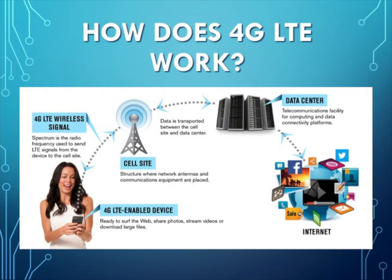Now that you know some basic information about LTE, you must be wondering how it works. As we can see in the picture, the information is passed back and forth to three important places: the 4G LTE device, the cell site, and the data center. The 4G LTE enabled device is like one's smartphone. The cell site is a structure where network antennas and communication equipment are placed. The data center is the telecommunications facility for computing and data connectivity platforms, and it also connects with the internet.